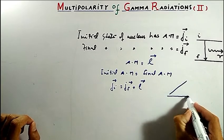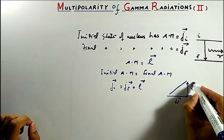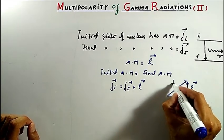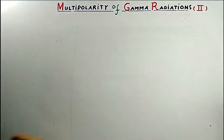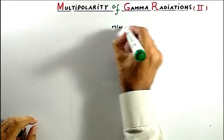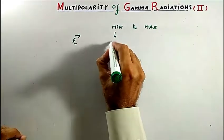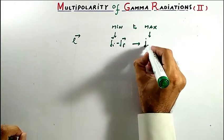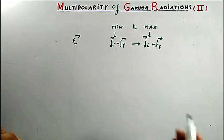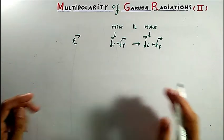These three quantities J_i, J_f, and L should form a triangle, such that J_f plus L equals J_i. L has values from minimum to maximum: L ranges from |J_i minus J_f| to J_i plus J_f. This value depends on which state the nucleus was in and to which state the transition takes place.